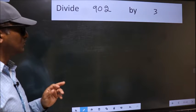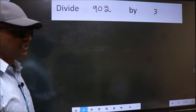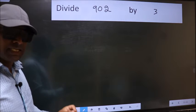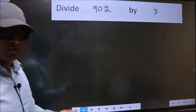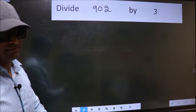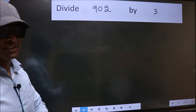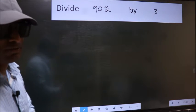Divide 902 by 3. While doing this division, many do this mistake. What is the mistake that they do? I will let you know. But before that, we should frame it in this way.